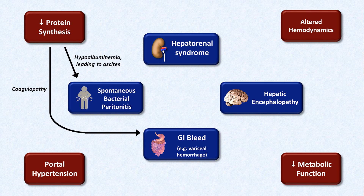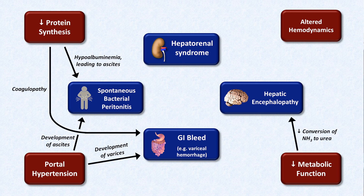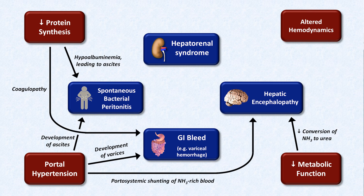Moving to portal hypertension, this also contributes to the development of ascites, and by causing esophageal and gastric varices, can lead to a GI hemorrhage. Decreased metabolic function of the liver includes the decreased conversion of ammonia to urea, which is hypothesized to be the primary cause of hepatic encephalopathy. Portal hypertension contributes to that problem, since varices and other portal systemic shunts cause ammonia-rich blood from the intestines to bypass the liver altogether.